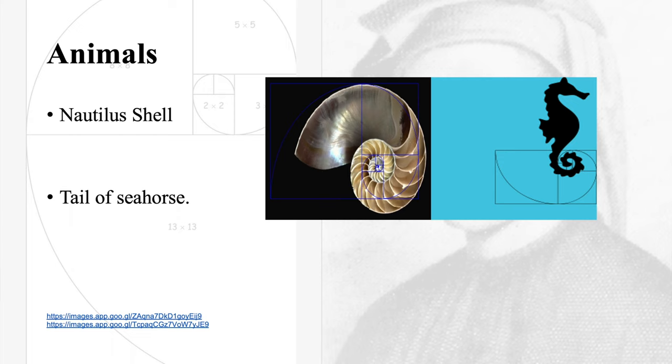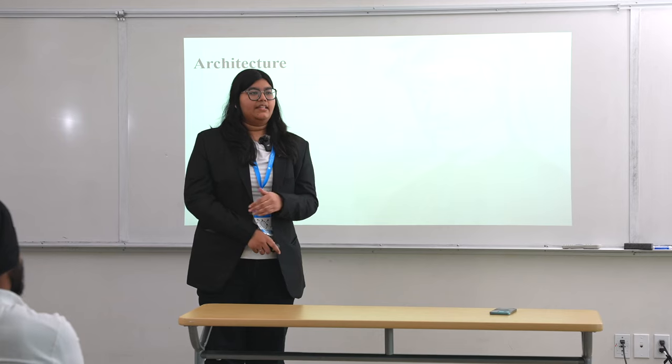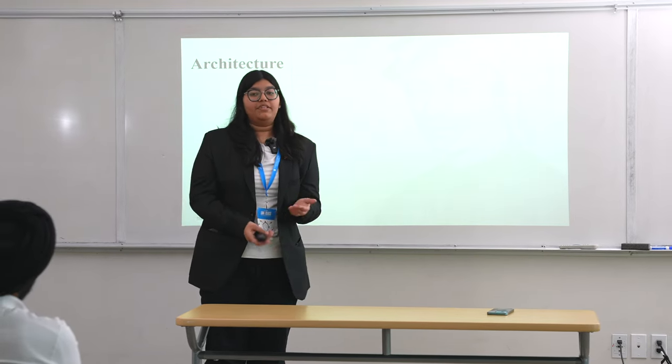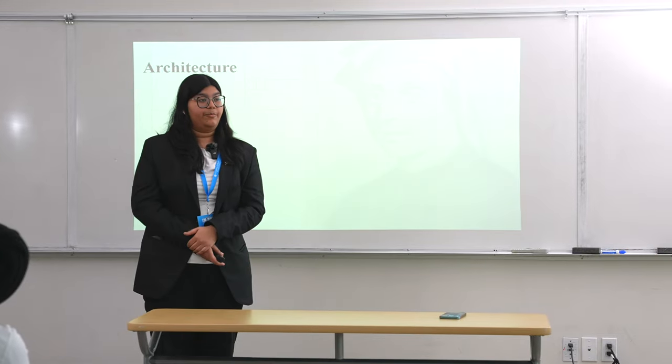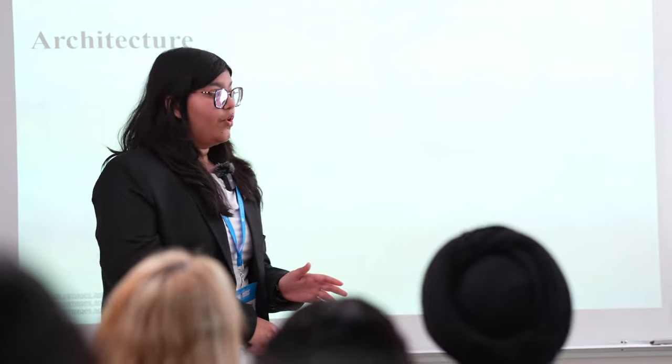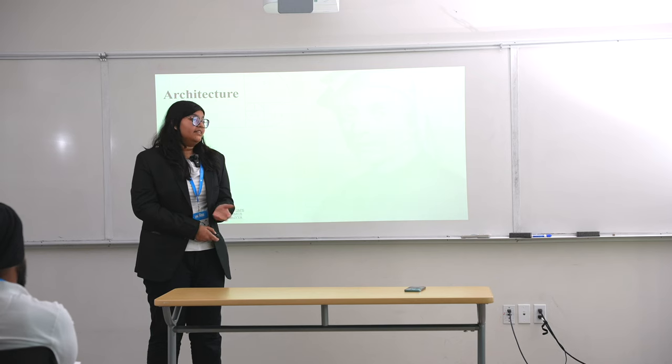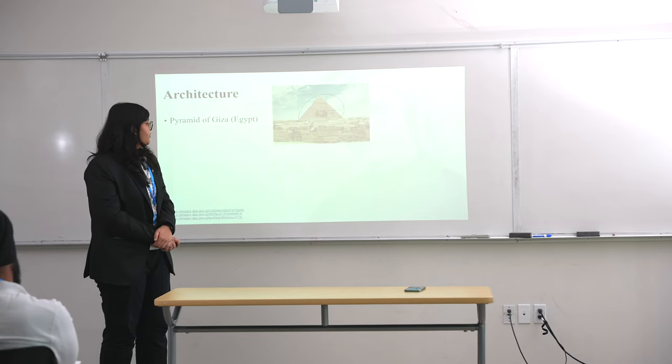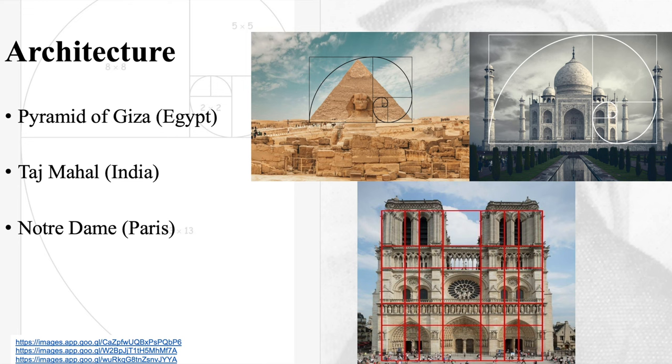See how it's pretty beautiful and fascinating in architecture. You know that our eyes are so accustomed to seeing buildings that have the golden ratio that if we see a building that doesn't follow the Fibonacci sequence and the golden ratio, we see it as a little bit different. It's not wrong with the building. It's just that our eyes are accustomed to it. Some of the examples are Pyramid of Giza in Egypt, Taj Mahal in India, Notre Dame in Paris.